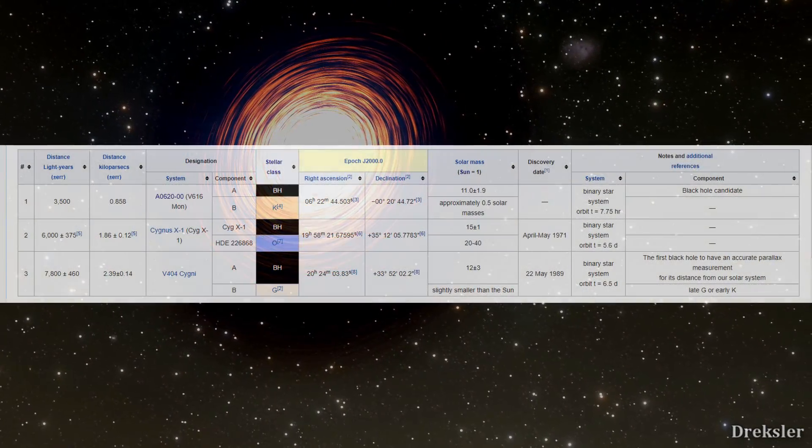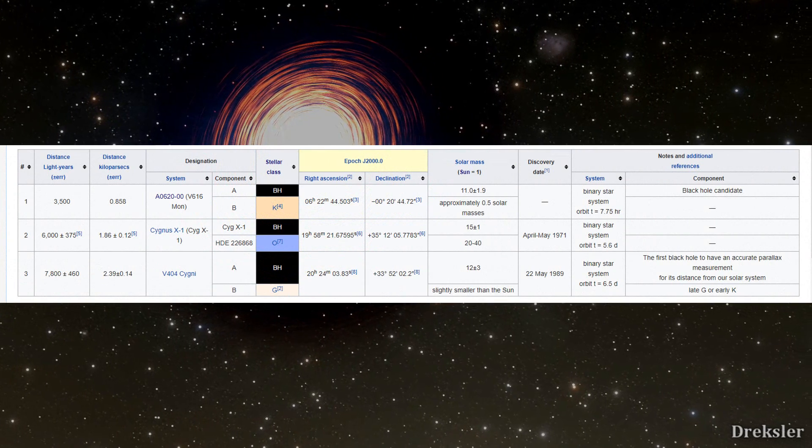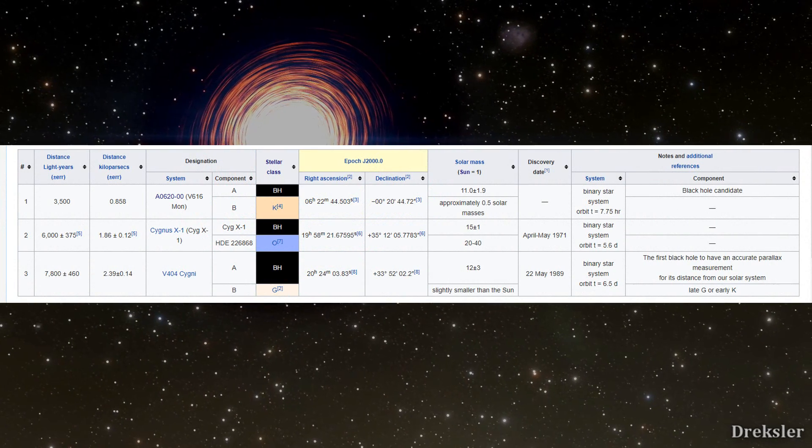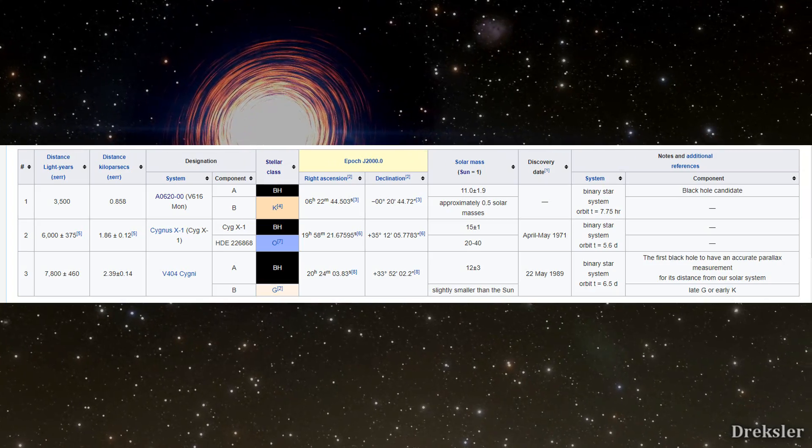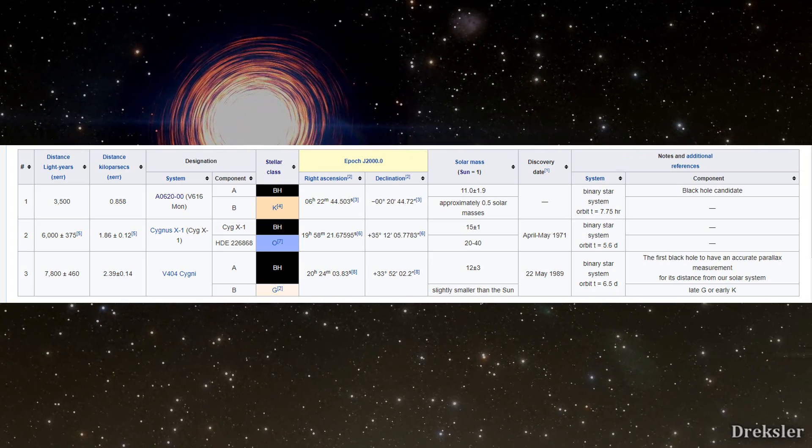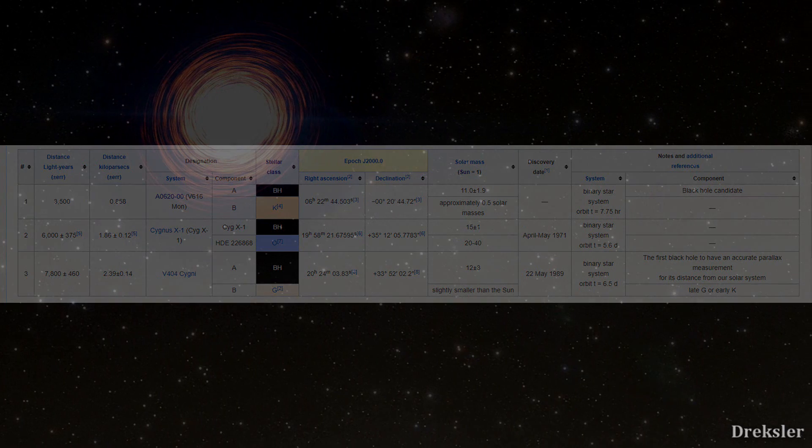But the closest black hole we have found is also not really close at all. It is around 3,500 light years away. So let's see how much will it take us to reach the closest black hole with current technology.